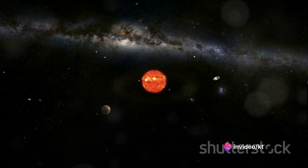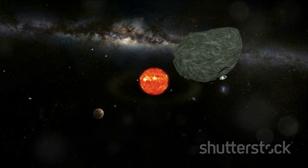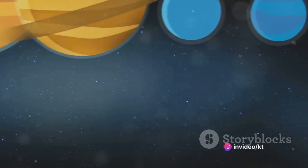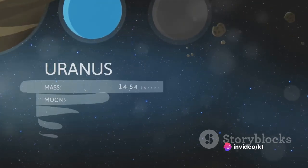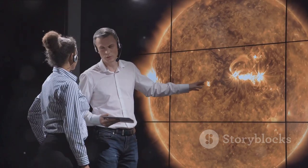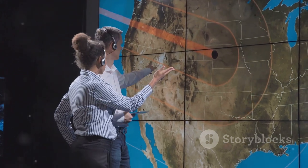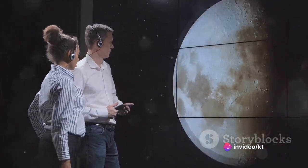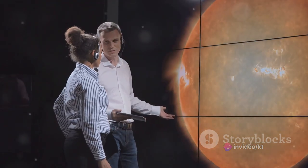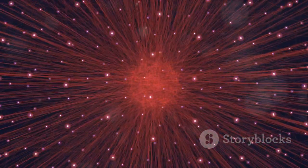As measurements were taken, the sheer size of UY Scuti began to emerge. It was not simply bigger than our sun, it was vastly, almost unimaginably so. If placed at the center of our solar system, its surface would extend beyond the orbit of Jupiter. The star was enormous, dwarfing all others known to science at the time. The discovery of UY Scuti's true nature sent ripples through the astronomical community. It challenged previous conceptions of star sizes and opened up new questions about the limits of stellar evolution and the fate of such colossal stars.